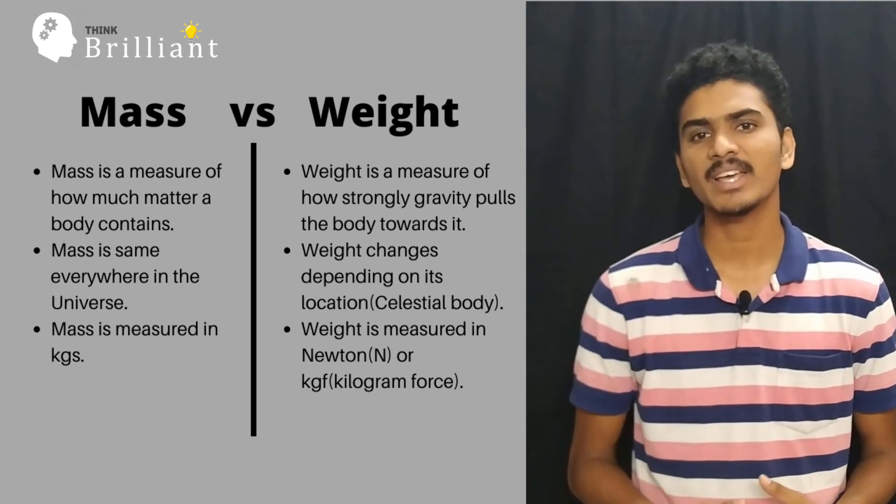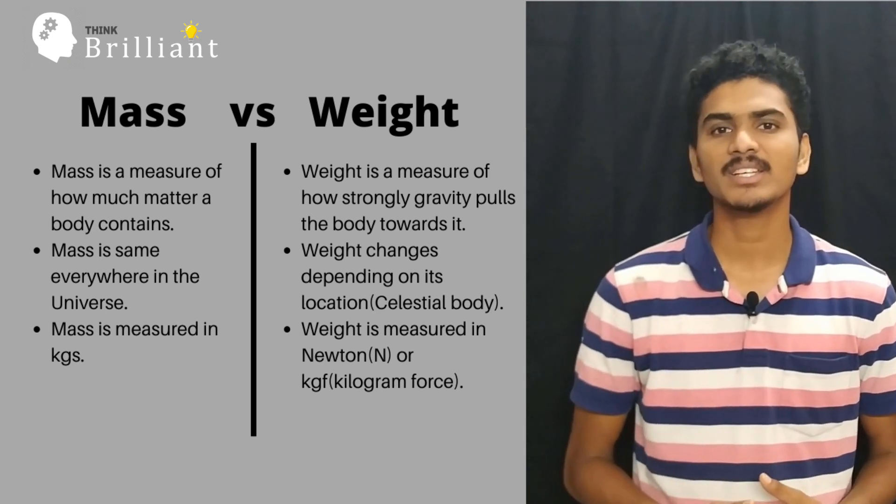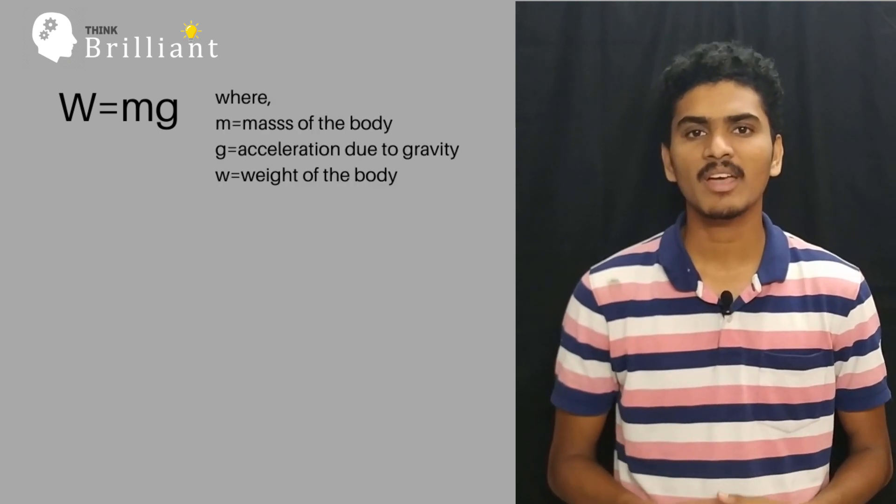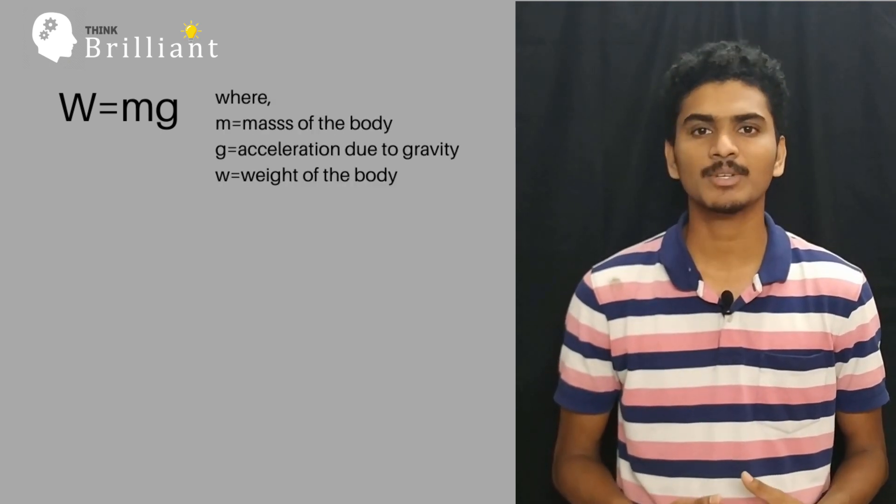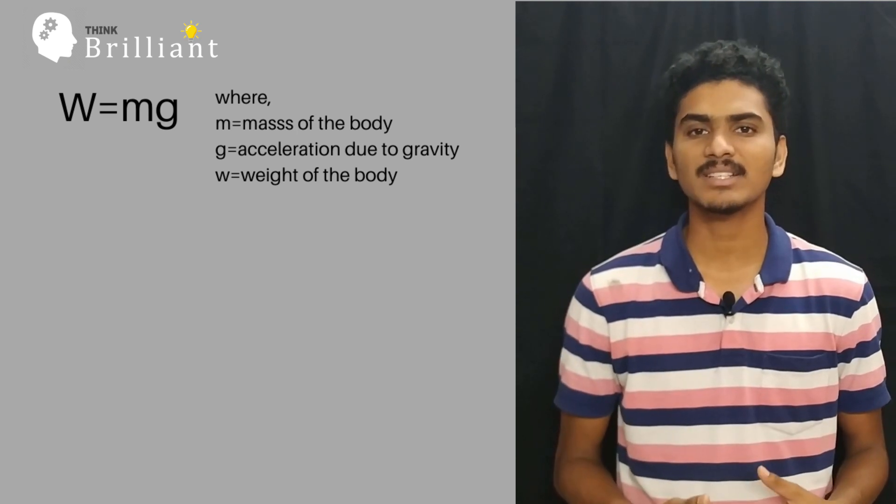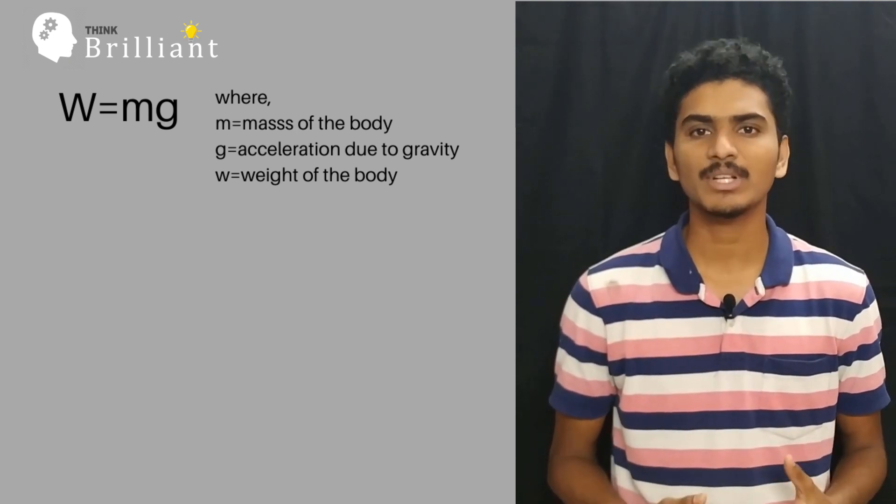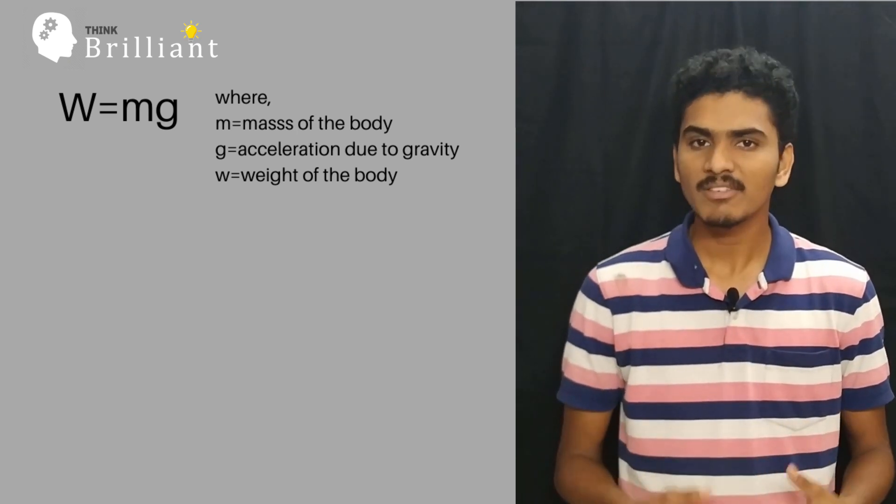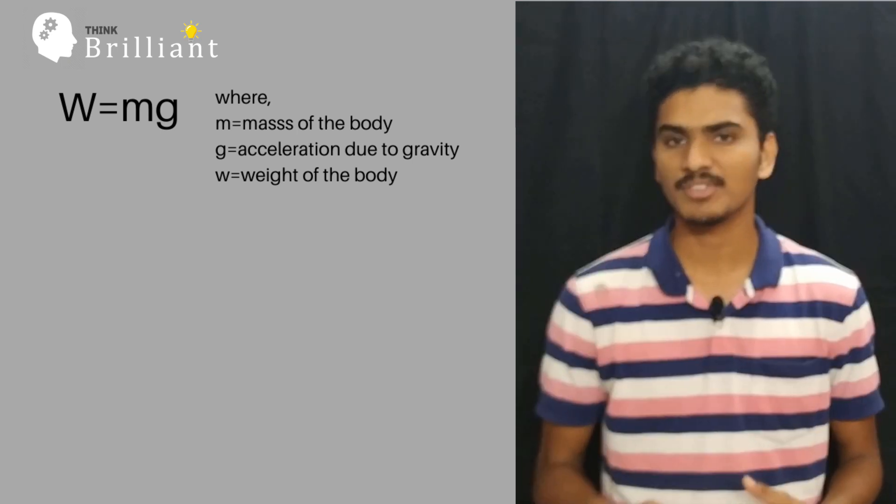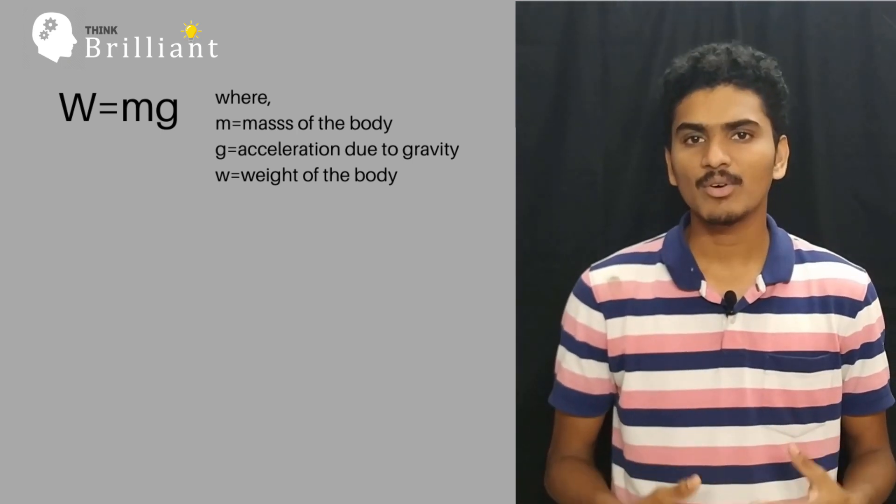The relation between mass and weight is given by W = mg, where m is the mass of the body, g is the acceleration due to gravity, and W is the weight of the body, which depends upon the value of g.